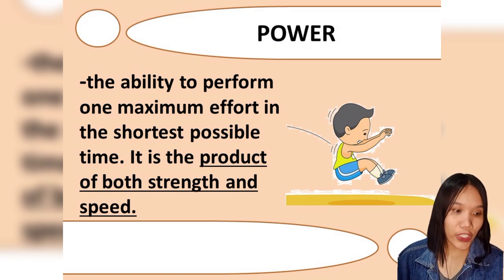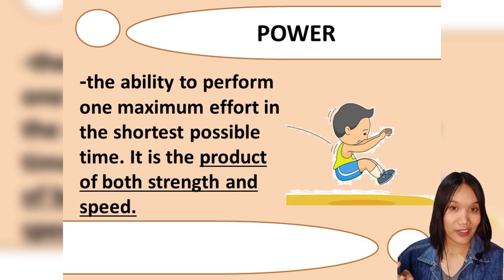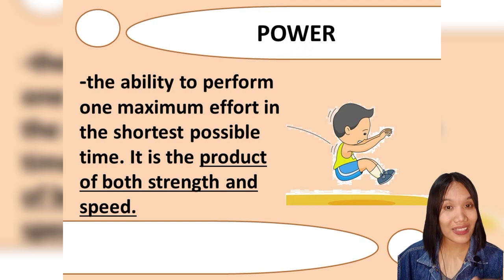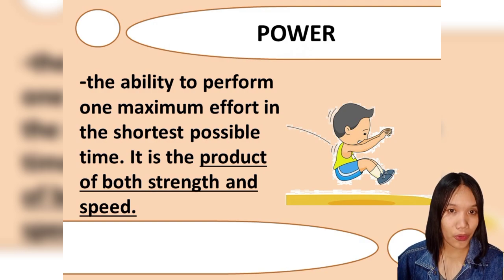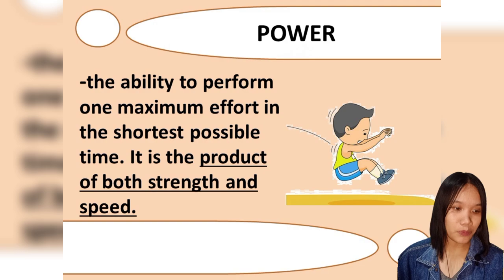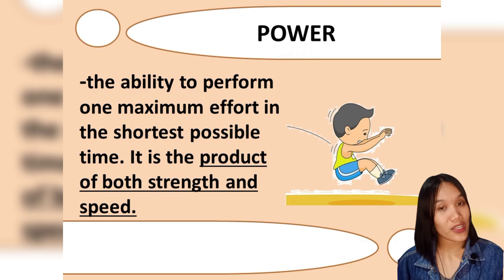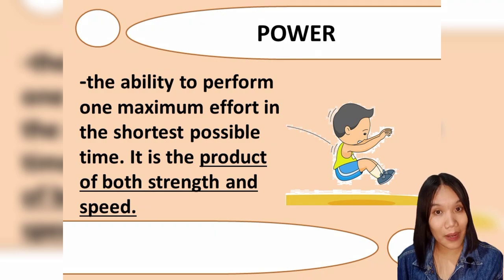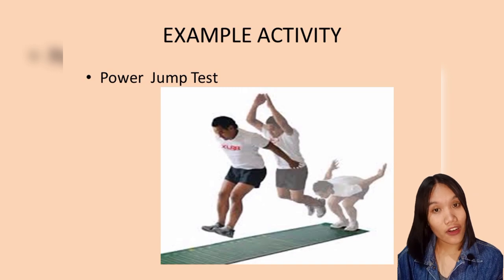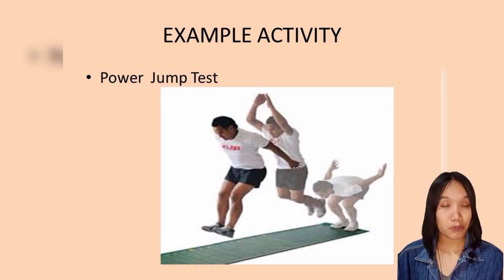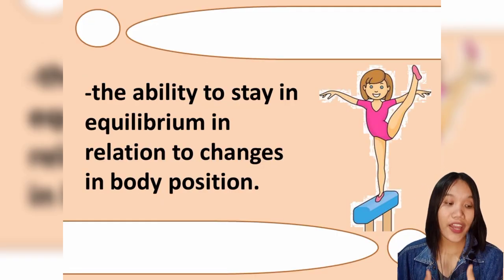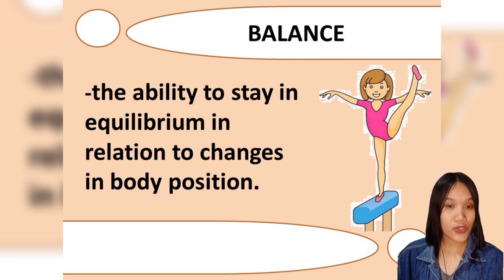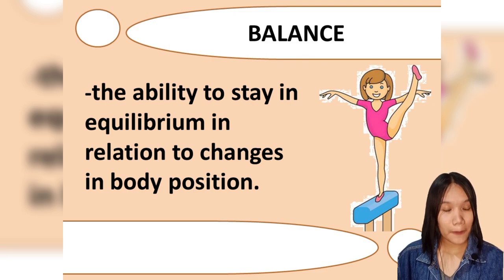Power is the ability to perform a maximum effort in the shortest possible time — it is the product of both strength and speed. When you combine strength and speed, that is power. An example is the long jump, where you combine strength and speed in one explosive movement.